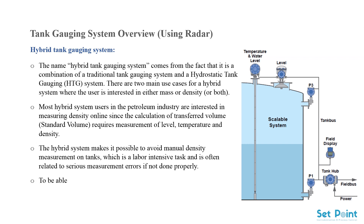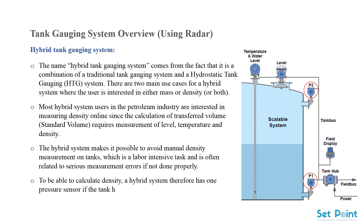To calculate density, a hybrid system uses one pressure sensor if the tank has atmospheric pressure, and two pressure sensors (P1 and P3) if the tank is not freely ventilated.